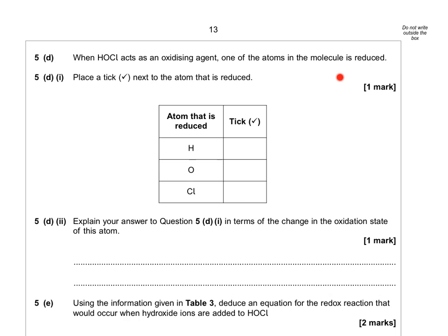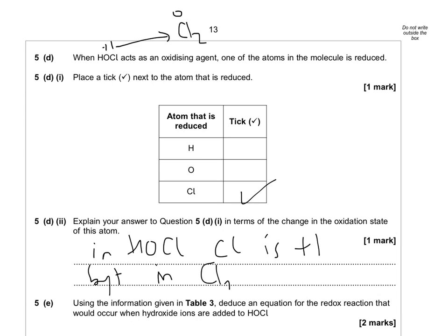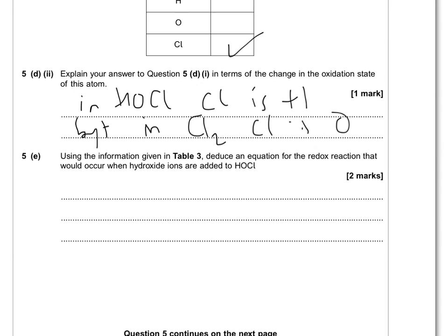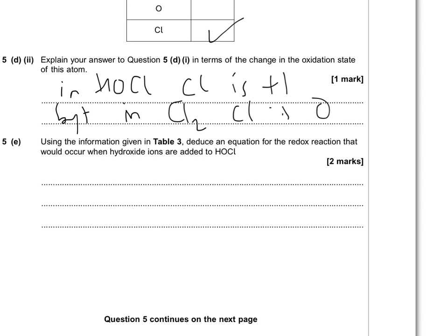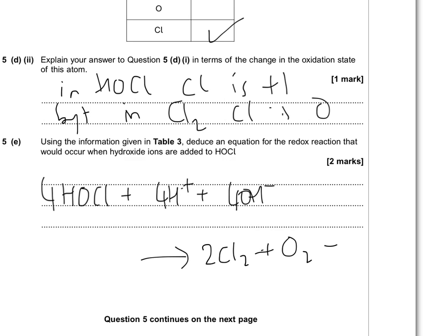When HOCl reacts as an oxidising agent, one of the atoms is reduced. The answer is chlorine — in HOCl, Cl is +1, but in Cl₂ it is 0, so chlorine is being reduced and therefore acts as an oxidising agent. Using the information from table 3, deduce an equation for the redox reaction that would occur when hydroxide ions are added to HOCl: 4HOCl + 4OH⁻ → 2Cl₂ + O₂ + 2H₂O (combining the H⁺ and OH⁻ to form water and cancelling).